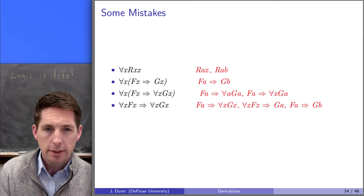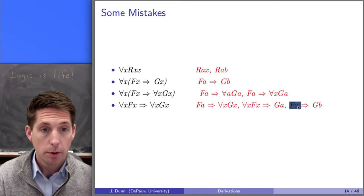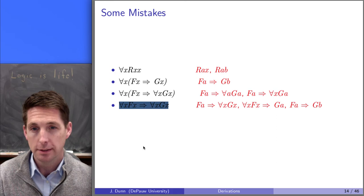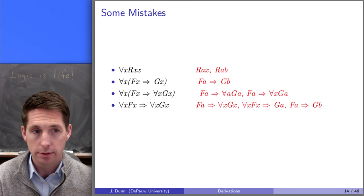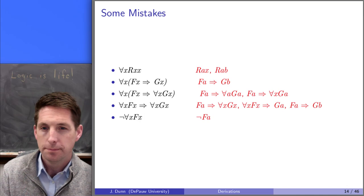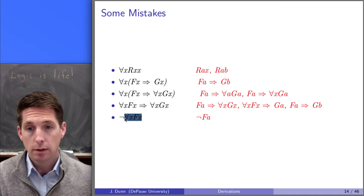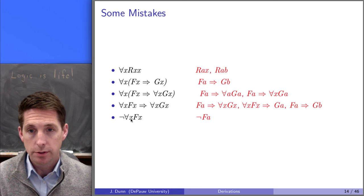What about these? Why are these all mistakes? The first does universal out on the first part of the formula, the second on the second part, the third on both parts. The reason this isn't allowed is that the main connective of this formula is not a universal — it's an arrow. So before you can do any universal out, you'd have to do arrow out first and get one of those pieces by itself. Similarly, this other example is also a mistake for the same reason: the main connective is the negation, not the universal. Because of that, you cannot apply universal out — we'll need to do something else with formulas like this, which we'll see in later slides.